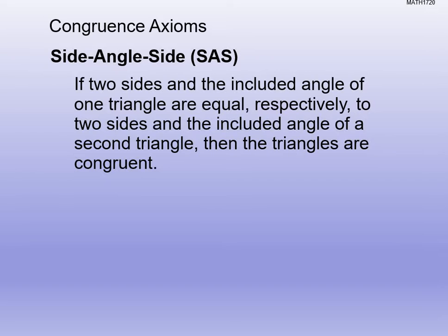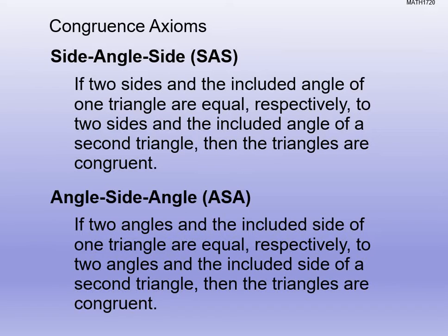This is a little bit of a review from geometry. We're talking about side-angle-side: if two sides and the included angle of one triangle are equal respectively to two sides and the included angle of a second triangle, they are congruent. We also have angle-side-angle: if two angles and the included side of one triangle are equal respectively to two angles and the included side of a second triangle, then the triangles are congruent.